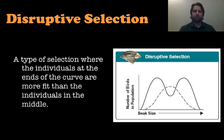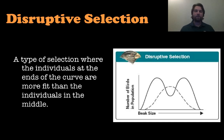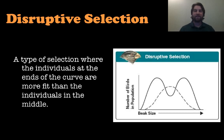The last type is disruptive selection, where the individuals at the ends of the curve are better suited for the environment than those in the middle. You end up with a curve that has two peaks because the ones in the middle are selected against — their numbers go down while the ones on the sides go up. A great example is birds with small, medium, and large beaks: if there's no need for medium beaks, only those with small and large beaks are selected for because of the different food sources available to them.